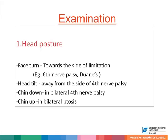Abnormal head posture in patients with diplopia usually occurs in the direction of limitation. For example, in a sixth nerve palsy, the patient turns his face towards the side of the palsy. In a fourth nerve palsy, the patient will tilt his head away from the side of the palsy. In a bilateral fourth nerve palsy, the patient adopts a chin-down posture, and in bilateral ptosis, the patient adopts a chin-up posture to overcome the ptosis.